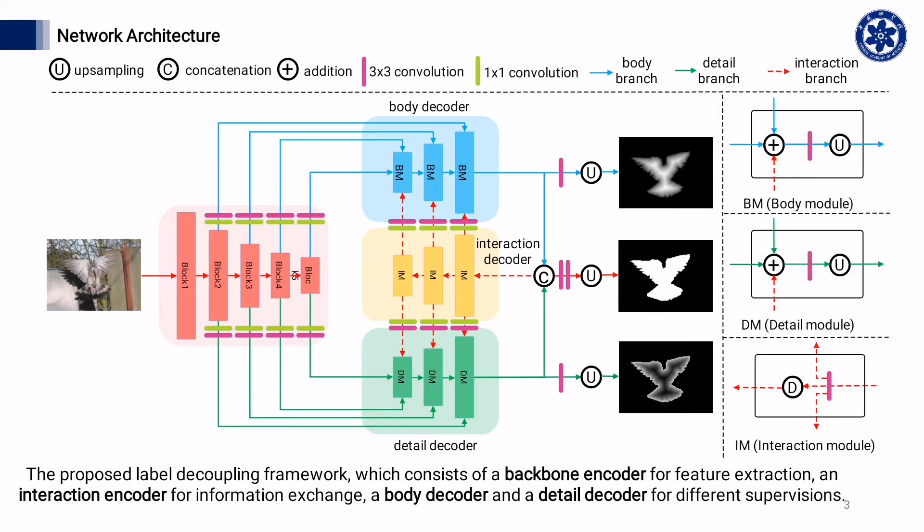To adapt to these labels, we design a feature interaction network, which mainly includes two branches: body branch and detail branch. These two branches make full use of the complementarity between features.